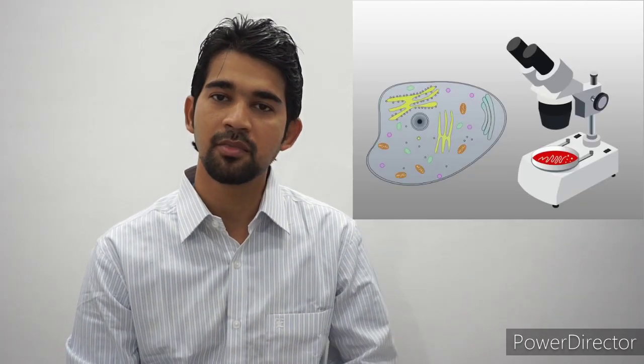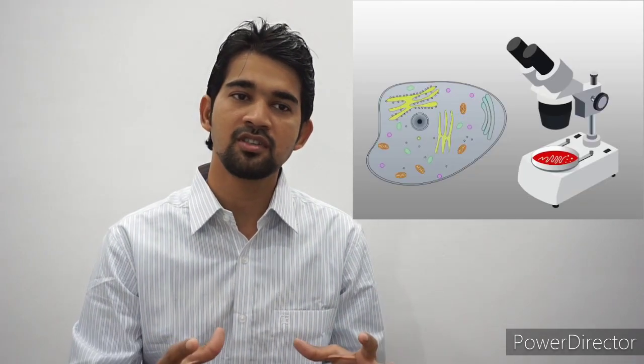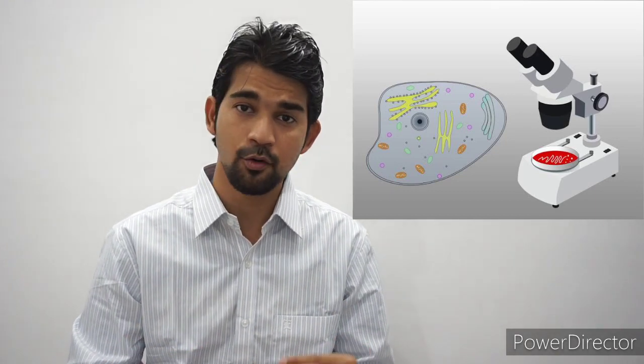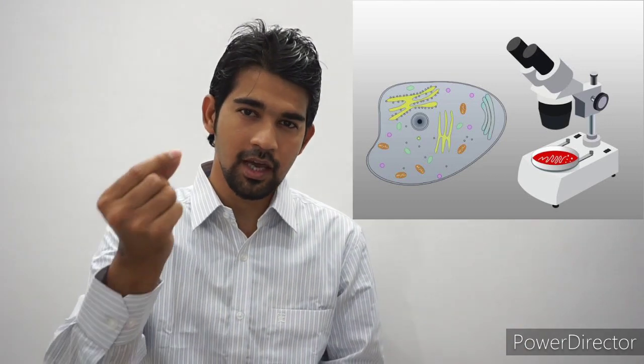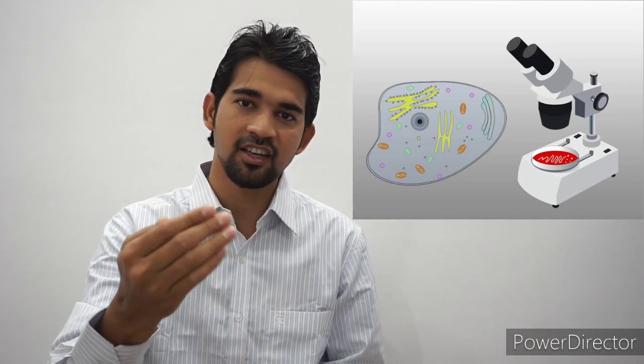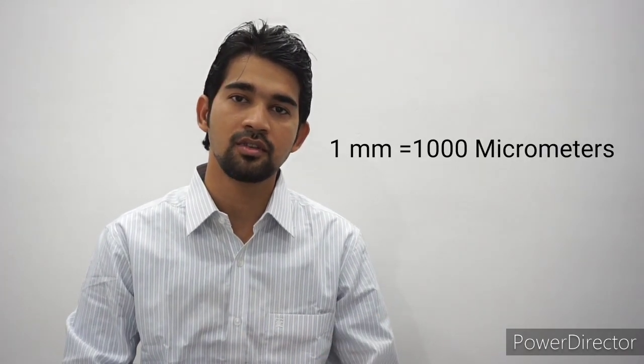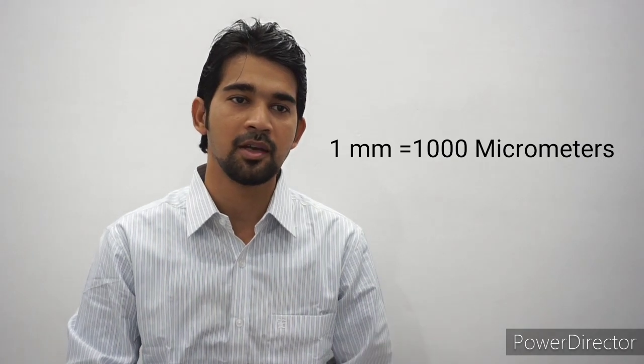Most plant and animal cells are only visible under a microscope. They range in dimension between 1 and 100 micrometers. If you're wondering what a micrometer is — if you look at the tip of a pen, a cell is about 10 to 100 times smaller than that. One micrometer is the thousandth part of a millimeter.